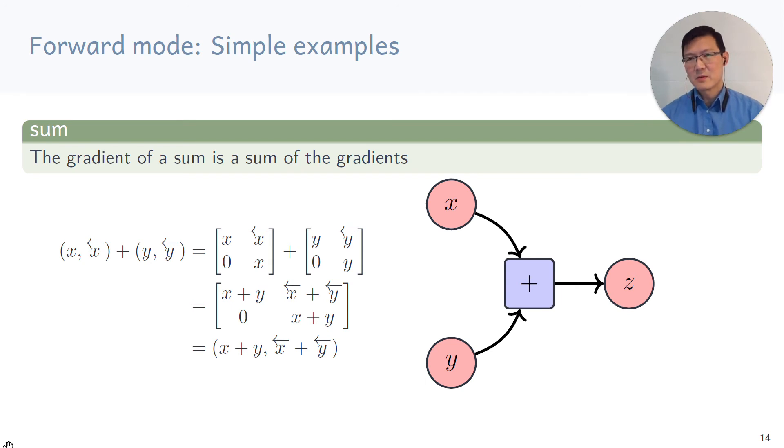Let me just work out some simple examples for forward mode automatic differentiation. Imagine we have a sum of two variables x and y and we want to compute its gradients. Remember for forward mode, we can represent dual numbers as two by two matrices. We can just write two variables x and y as two matrices as shown. We can then just use directly matrix addition to get the result, which we can then identify back as the dual number for x plus y. This concludes that the gradient of a sum is the sum of the gradients for forward mode automatic differentiation.